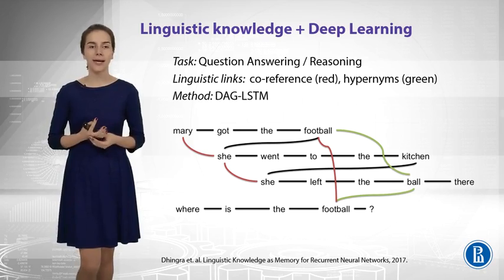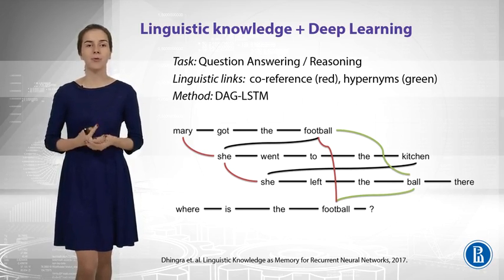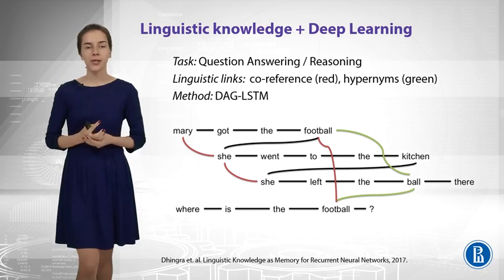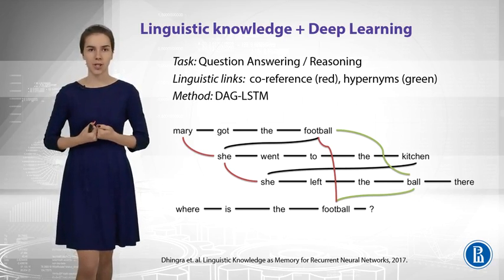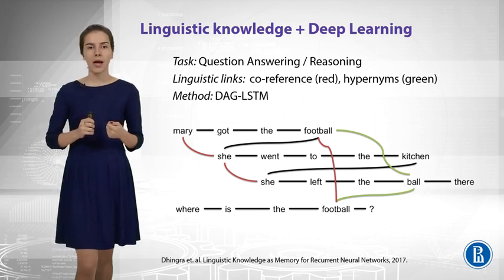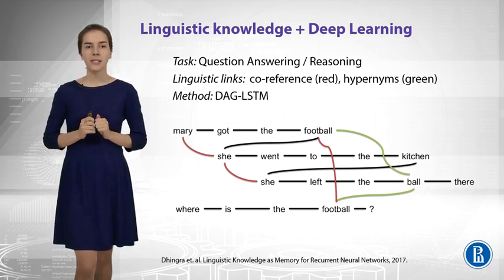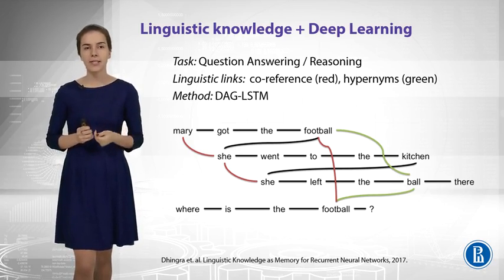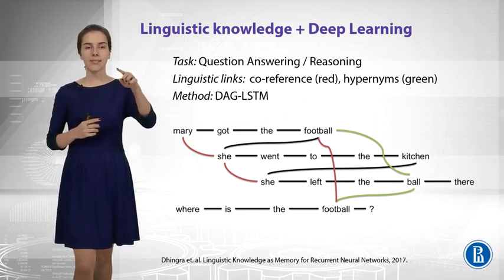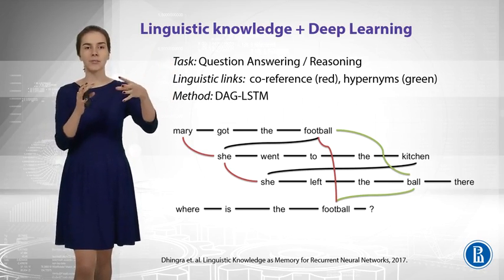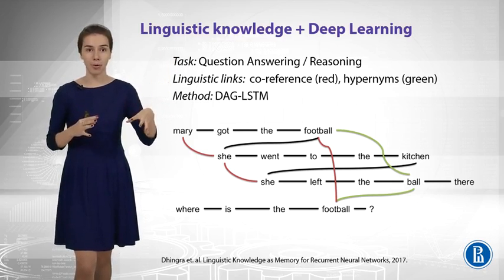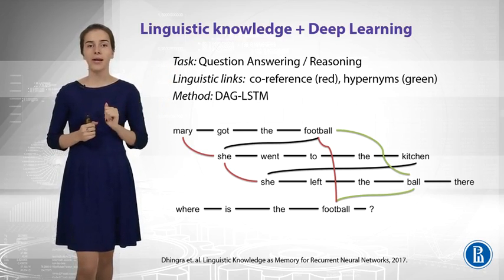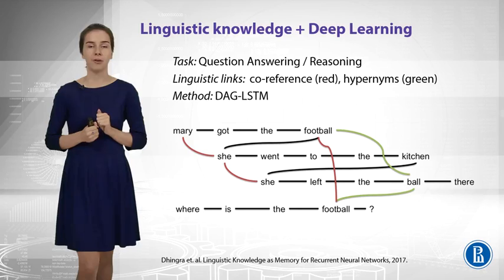You might have heard about LSTM networks — a particular type of recurrent neural networks. But here you see that you have not only the sequential transition edges in your data representation, but also some other edges. Those red edges tell you about coreference. Coreference is another linguistic type of relation between words that says, like, she is the same as Mary — she is just a substitute for Mary. And for example, this and that football is the same ball, just mentioned twice.